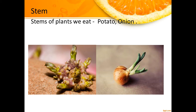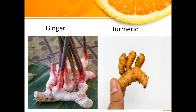Do you know that potato and onion are the underground stems of plants that we eat? Ginger and turmeric are also the stems of plants that we eat as spice in our daily life.